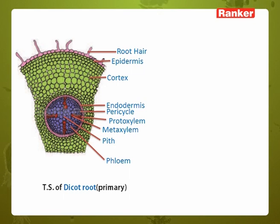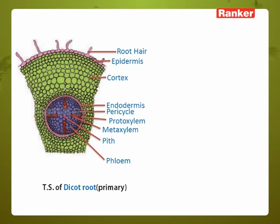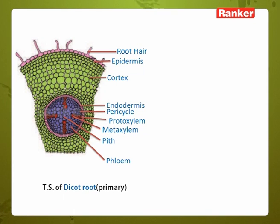In dicot root, the vascular arrangement is alternate and radial. The vascular bundle varies with different plants — it may be diarch, triarch, or tetrarch condition. If there are two bands of xylem and phloem it is diarch; if there are three bands it is triarch; and if there are four bands of xylem and phloem it is tetrarch. The xylem is in the exarch condition.